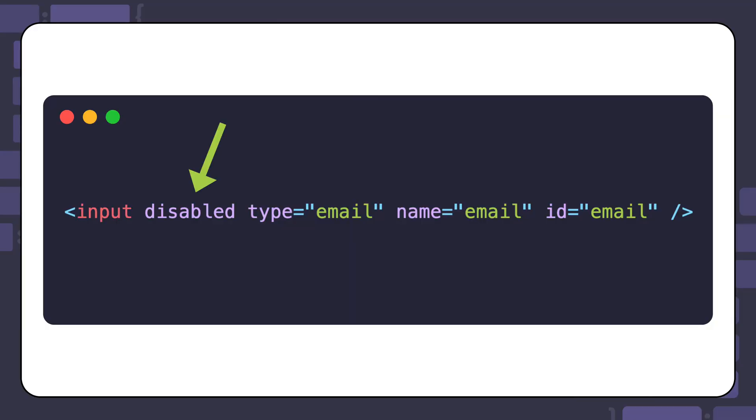Another form state is the disabled state. This state shows users that an input cannot be focused or activated. To disable an input, you can add the disabled boolean attribute to the element, like this. If the user tries to click on the input, then the focus will not be enabled. Similar to the focused state, you can choose to add additional styles for the disabled state using CSS.